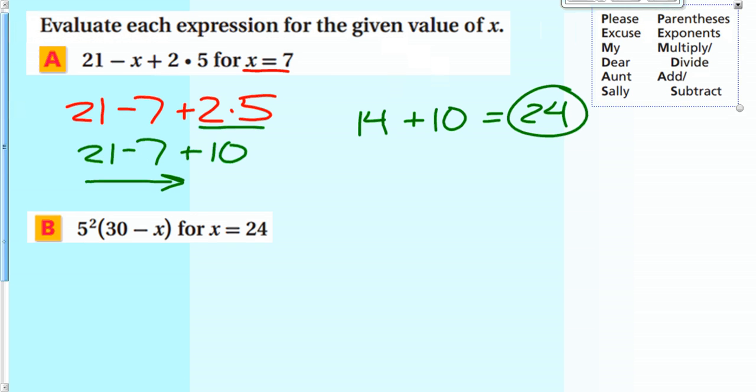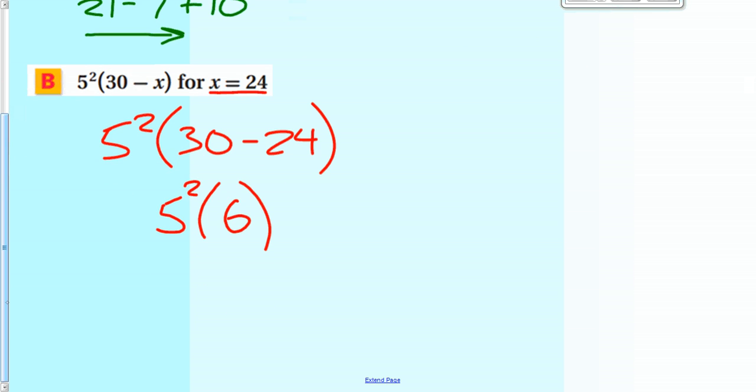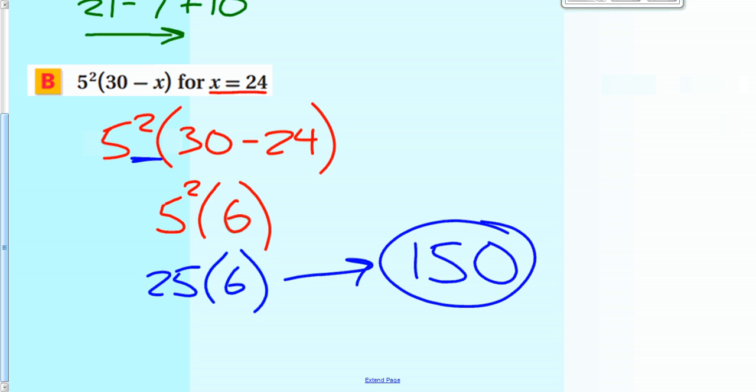Alright. Same thing with this one. We're going to insert 24 for x. So 5 to the second times 30 minus 24. And we're going to take care of parentheses first. So 30 minus 24 is 6. And 5 to the second on the outside. And there's nothing in between. So there's no symbol in between here. So that's how I know it's 5 to the second times 6, or 25 times 6, which is 150. Alright. So there's that.